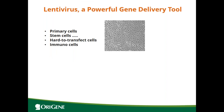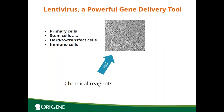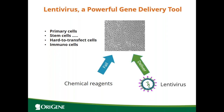You already know that lentivirus is a powerful gene delivery tool. For some cells, such as primary cells, stem cells, hard-to-transfect cells, and immune cells — as mentioned for CAR T production — the regular chemical-based transfection reagent has very low transfection efficiency. However, lentivirus can efficiently deliver genes into those cells.